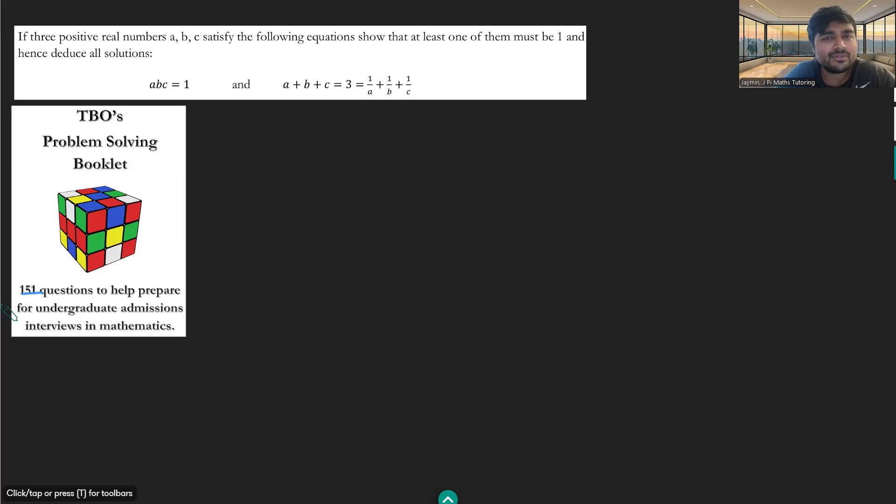If three positive real numbers A, B, and C satisfy the following equations, show that at least one of them must be one and hence deduce all solutions. So three positive numbers and their product is one, their sum is three, as is the sum of the reciprocals of those numbers.